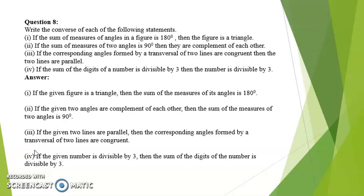Third: if the corresponding angles formed by a transversal of two lines are congruent then the two lines are parallel. Converse: if the given two lines are parallel then the corresponding angles formed by a transversal of the two lines are congruent.